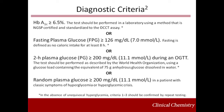Repeat testing to confirm hyperglycemia must be carried out on a separate day. In the absence of unequivocal hyperglycemia with symptoms, two abnormal blood glucose levels on a single day do not constitute diabetes. Repeat testing is not required for patients who have unequivocal hyperglycemia, for example, greater than or equal to 200 milligrams per deciliter, with symptoms consistent with hyperglycemia. The World Health Organization and the International Diabetes Federation recommend either a fasting plasma glucose test or a two-hour post-load glucose test that uses the same cutoffs as the ADA.